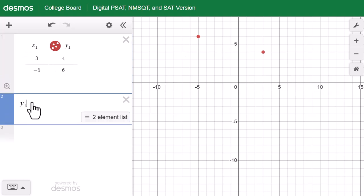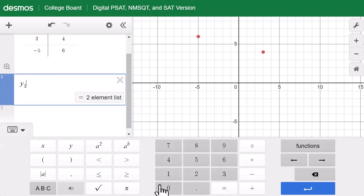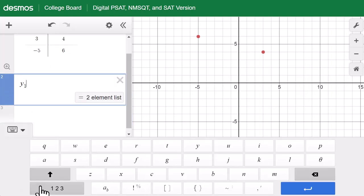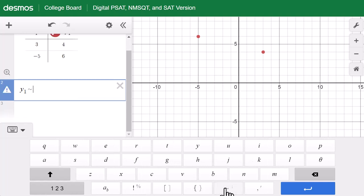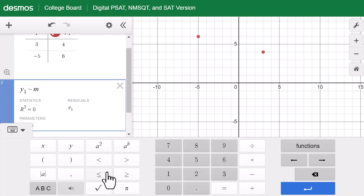Put y1, approximator symbol. Click on ABC. It's this. Then you can type in mx1 plus b.